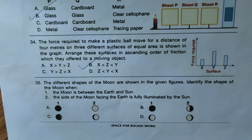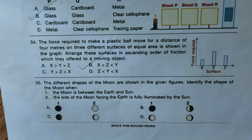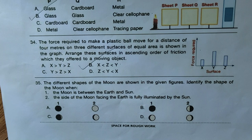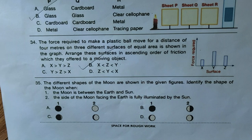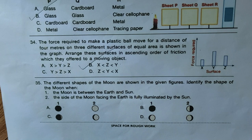Question thirty-five: identify the shape of the moon when (1) the moon is between the Earth and the Sun, and (2) the side of the moon facing the Earth is fully illuminated by the Sun. When the moon is between Earth and Sun, this is a solar eclipse — the moon appears as a dark ball. When the side facing Earth is fully illuminated, the moon shines brightly — this is a full moon. For statement one the moon will be totally dark, and for statement two it will be fully bright. Option A matches both statements and is the correct answer.